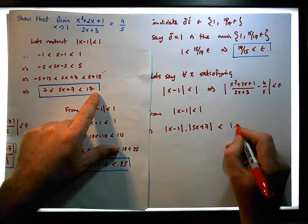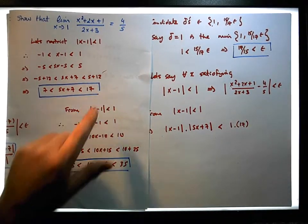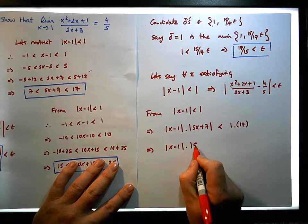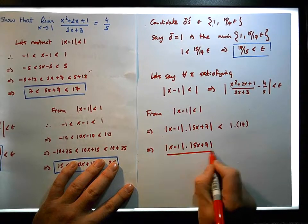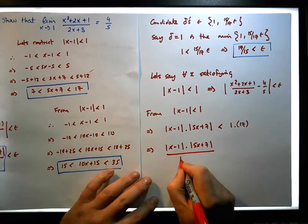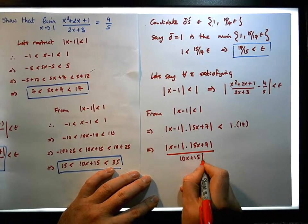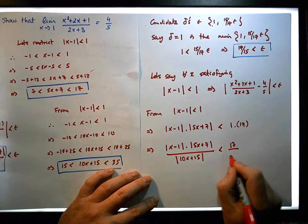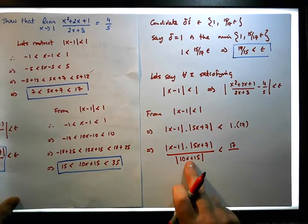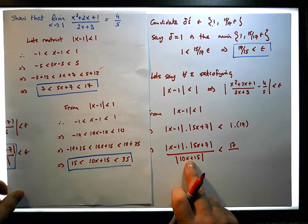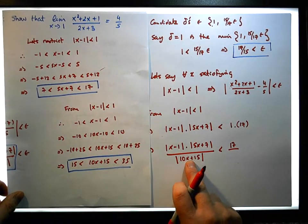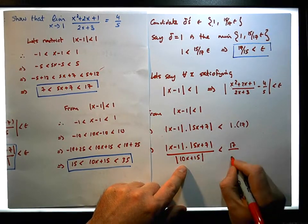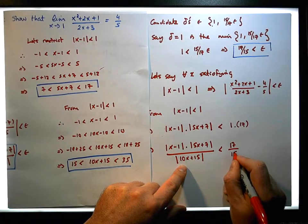5x plus 7 must be smaller than 17. And also, this implies that x minus 1 times 5x plus 7, all over 10x plus 15, must be less than 17 all over — well, we want to make this the bigger number. So we make the denominator a bigger number than what's over here, so we know that this expression is actually less than 17 over 15.